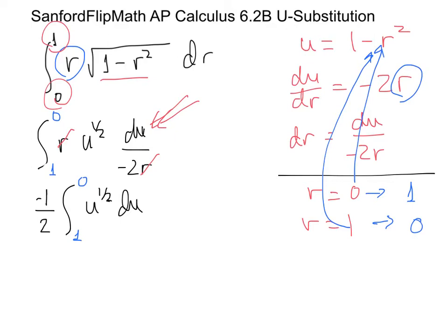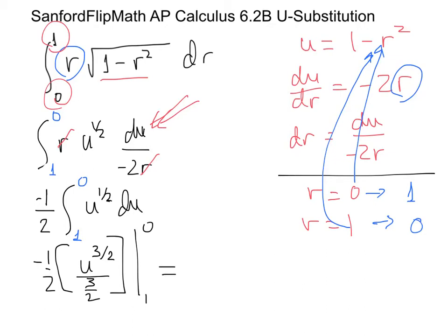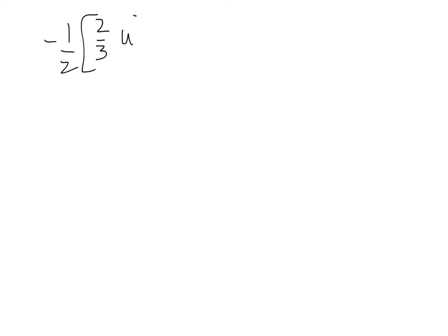At this point this is like any other problem. The antiderivative of u^(1/2) is u^(3/2), divided by the new exponent 3/2. We evaluate that between 1 and 0 instead of 0 and 1. Rewriting: −1/2 times (2/3) u^(3/2), evaluated from 1 to 0. Plugging in the top value first: −1/2 × 2/3 × 0^(3/2).